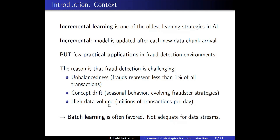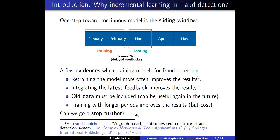One improvement over batch learning is the sliding window. In this example, each month has more or less a million transactions and we train a model using batch learning. To build the model to be used in March, we use a training set with data from January and February. We introduce a gap to model the delayed feedback discussed earlier, and the older data is simply discarded. If we want the model to be used in April, we slide all the boxes one step to the right. This is the sliding window technique, a very common strategy in transactional companies.